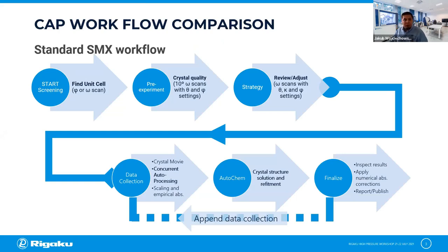Ross mentioned the standard workflow, and this is how we usually do it for small molecules: find the unit cell by screening your crystal with an omega or phi scan, then do the pre-experiment — usually a 10-degree omega scan with different omega and theta settings to capture full resolution. Then automatic strategy collection, data collection, auto-processing, scaling, and empirical absorption correction. AutoChem kicks in to solve and refine, and you finalize if needed. It's highly advisable to always do numerical absorption correction; even for very low-mu crystals it improves data significantly. Protein crystallography doesn't generally do this, but for small molecules we do.